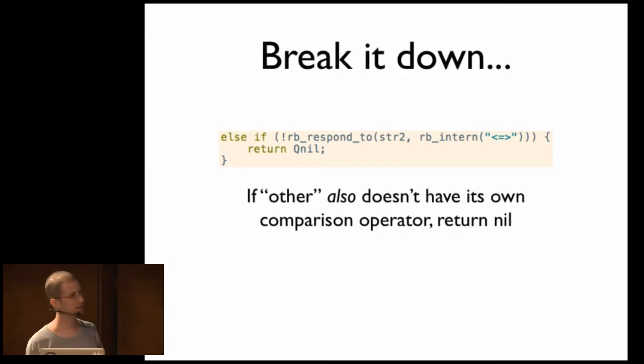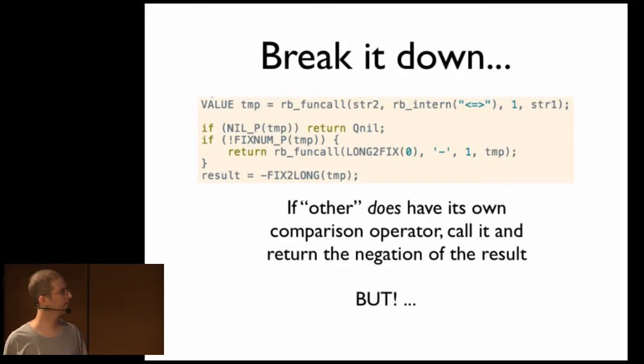We're going to check and see if other has a spaceship operator, right? If other doesn't have a spaceship operator, if it can be converted to a String, but it doesn't have a spaceship operator, then we're going to return nil. If other does have a comparison operator and does have a 2str method, we're going to call it and return the negation of the result. But did you catch? There's two things that are weird about this. First of all, we checked to see if there is a 2str method, but we never called it.